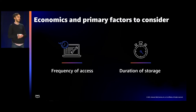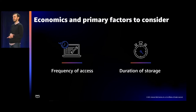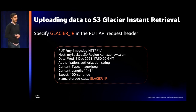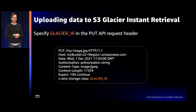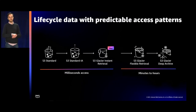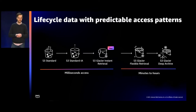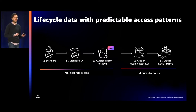S3 Glacier Instant Retrieval has a minimum storage duration of 90 days. So if you upload a file that you expect to delete within 90 days, we'd recommend writing to S3 Standard or S3 Standard Infrequent Access — which also has a minimum storage duration of 30 days. There are a few simple ways to get started. First, you can specify GLACIER_IR in the PUT API request header to write objects directly into the storage class — ideal if you know your data is rarely accessed right at the point of ingest. Or you can use S3 lifecycle policies to move data with predictable access patterns to lower-cost storage classes. Note that S3 Standard, Standard Infrequent Access, and S3 Glacier Instant Retrieval all deliver milliseconds access, whereas S3 Glacier Flexible Retrieval and Deep Archive are designed for asynchronous access with retrieval times of minutes to hours.